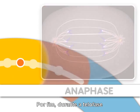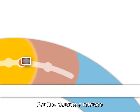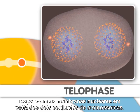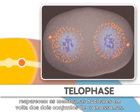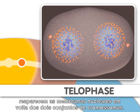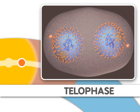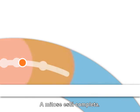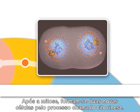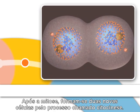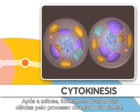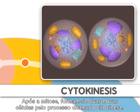Finally, during telophase, nuclear membranes reappear around the two sets of chromosomes. Mitosis is now complete. After mitosis, two new cells are formed by a process called cytokinesis.